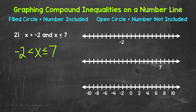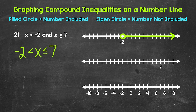First, we have x is greater than negative two. Negative two is not included, so we start with an open circle at negative two, then an arrow going right representing everything greater than negative two. Next, we have x is less than or equal to seven. Seven is included, so we need a filled circle at seven and then an arrow going left, representing everything less than seven.